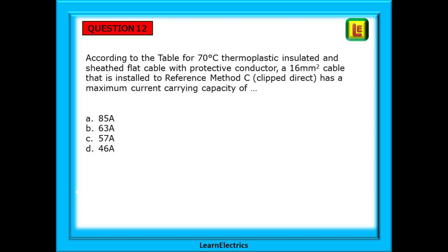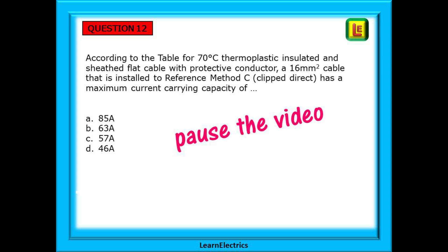Question 12: according to the table for 70 degrees centigrade thermoplastic insulated and sheathed flat cable with protective conductor, a 16mm squared cable that is installed to reference method C, or clipped direct, has a maximum current carrying capacity of what? Pause the video, read the question carefully — the table is there. Once you find the table, the rest should be easy. Use the keywords.